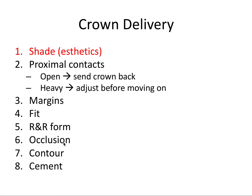For example, if you tried to check occlusion first and it was occluding very high but the crown wasn't seating all the way, you'd adjust the occlusion only to find that once the crown seats fully, it's not occluding at all. So check proximal contacts first, then check the margins to ensure the crown margin meets the prep margin, that retention and resistance form are adequate, occlusion is correct, and the crown is contoured anatomically. If everything looks good, cement first with temporary cement and then reassess, because once you use permanent cement, the crown won't come off without cutting it off.